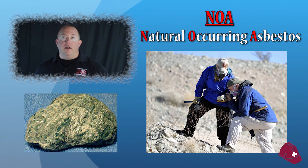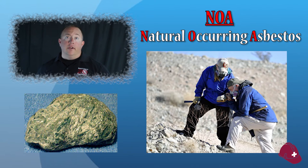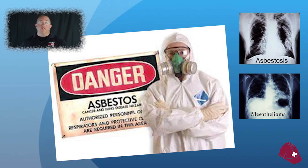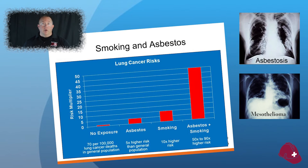Asbestos can also be found in Serpentine, which is California's State Rock. It contains NOA — Naturally Occurring Asbestos. It is present in 42 of the 58 counties and is identifiable by its green-gray, blue-black colors with a waxy, shiny surface. The health concerns of asbestos include cancers such as mesothelioma, asbestosis, stomach or colon cancer, and can begin 20 years after exposure. Smokers who work with asbestos have 92 times the rate of developing cancer, with 85% dying within 5 years of diagnosis.